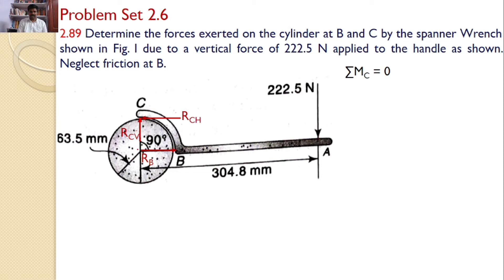Next, I require the distances from point C. The line of action of Rb is at a distance of the radius, that is 63.5 mm. And the line of action of this 222.5 is at a distance of 304.8 mm from point C. All the distances are given.